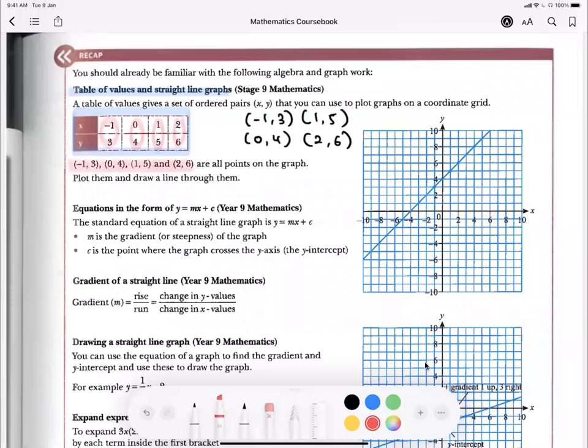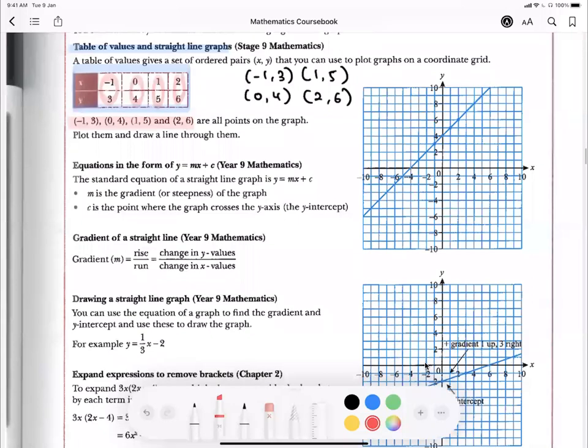Once you plot, then you can draw a straight line through them. Besides that, you also have to know what is the equation of a straight line graph, where m is the gradient. Okay, it shows how steep it is.